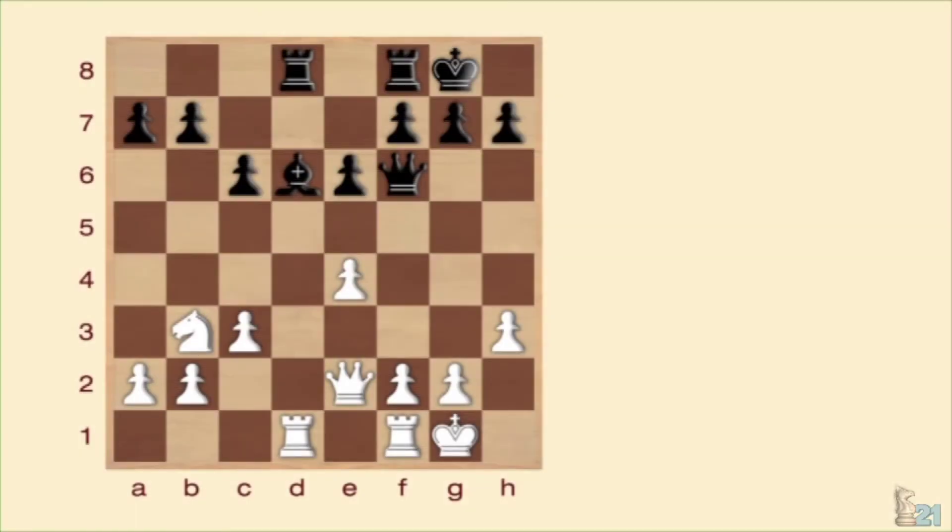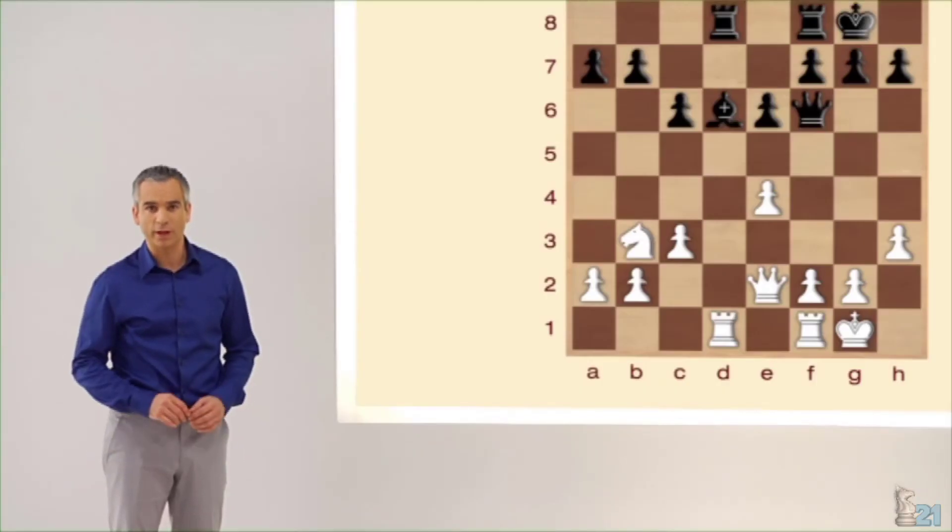Juegan blancas y logran ventaja material mediante un ataque doble. ¿Cómo? ¿Con qué jugadas? Tenéis de 2 a 10 minutos para pensarlo.